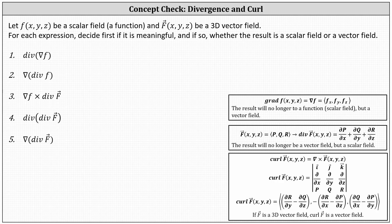For a quick review: we find the gradient of a function f, and the result is no longer a scalar field but a vector field. We determine the divergence of a vector field, and the result is no longer a vector field but a scalar field.